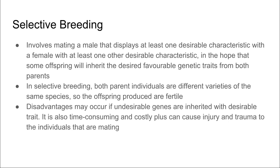Selective breeding involves mating a male with the characteristics that you desire with a female with another desirable characteristic, in the hope that these offspring will inherit these favorable genetic traits. Both parent individuals are different varieties of the same species, which means that the offspring being produced are fertile.